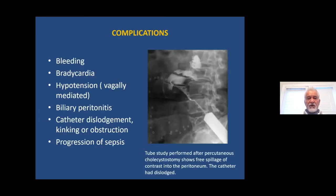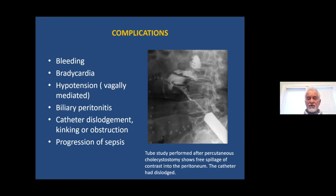Regarding complications: bleeding is a risk every time you place a needle anywhere in the body. Bradycardia is an important complication due to vagal-mediated hypotension, as the upper abdomen is innervated by the vagus nerve — it occurs uncommonly but one needs to be ready with atropine injection. Biliary peritonitis is a real complication that may result from catheter dislodgement, kinking, or obstruction. When the catheter is kinked, it does not drain, pressure in the gallbladder increases, and bile leaks through the hole where the catheter passes.